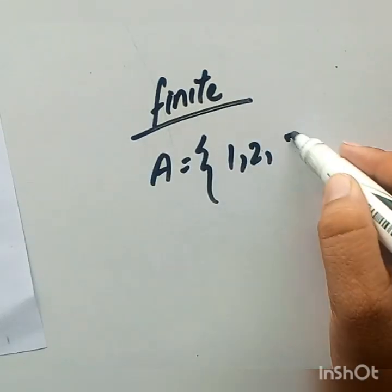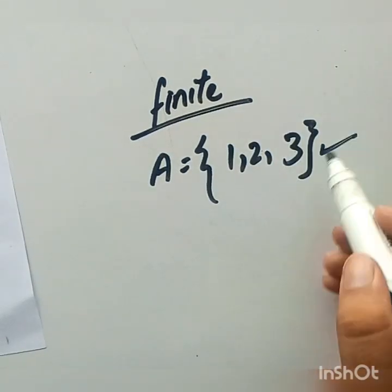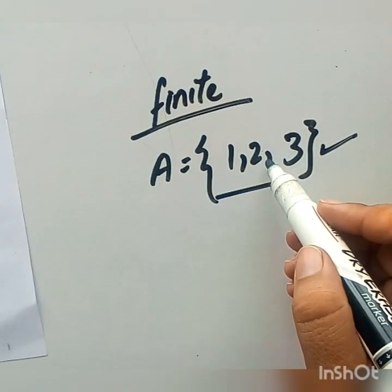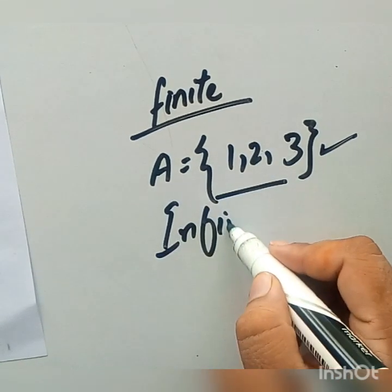A is equal to {1, 2, 3}. We can say that this set has 3 elements. So it is a finite set.